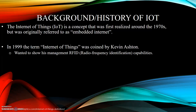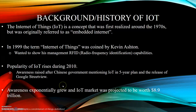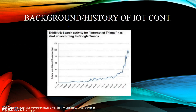In 1999, the term Internet of Things was coined by Kevin Ashton, who wanted to show his management that radio frequency identification, or RFID, capabilities were astronomically better than anything else at the time. Popularity of IoT rose during 2010, after the Chinese government mentioned IoT in their five-year plan and with the release of Google Street View. Awareness exponentially grew and the IoT market was projected to be worth $8.9 trillion. This chart shows that the relative level of interest increased in just one year from January 2013 to January 2014, from 20 to 100, which is five times the search activity.